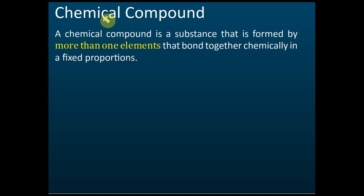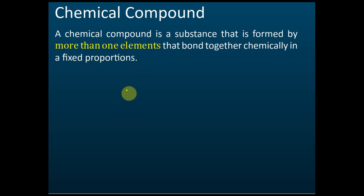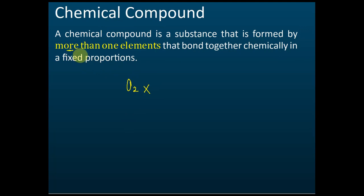First of all, we need to know what is a chemical compound. A chemical compound is a substance that is formed by more than one element that bond together chemically in fixed proportions. For example, oxygen O2 — is this a chemical compound? The answer is no, because it has only one element.